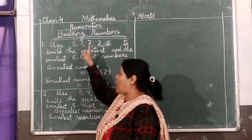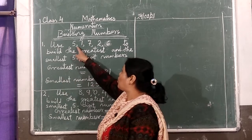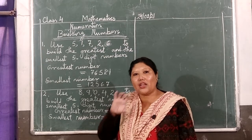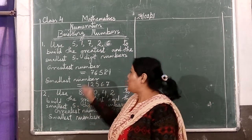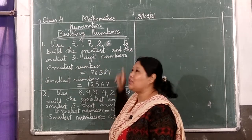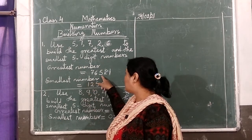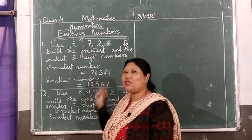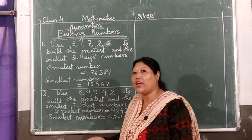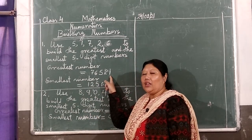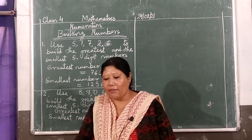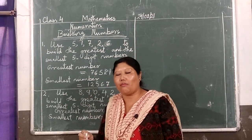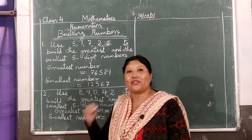If you put commas after each digit again, it will become just digits, not a number — not a 5-digit number. Here the question is to make a 5-digit number. It is 5 digits: 1, 2, 3, 4, 5 — but if you put commas like this, it will become just digits. Remember this. So don't put commas in the answer, but you have to put a comma according to the Indian place value system.